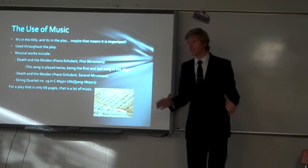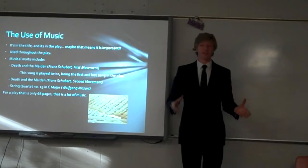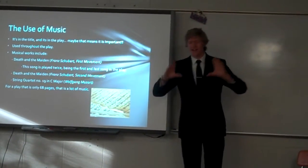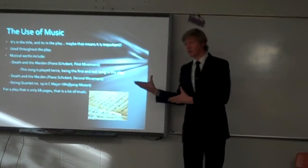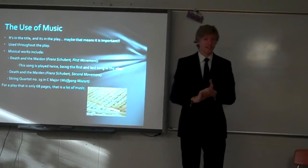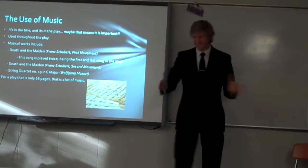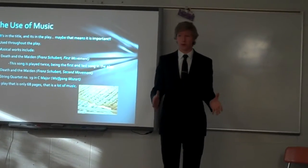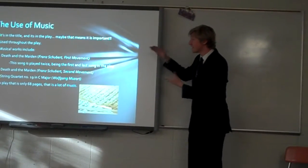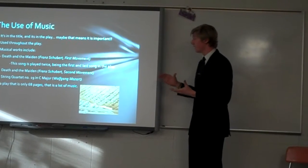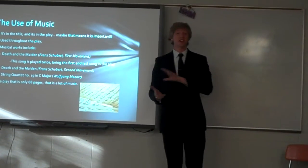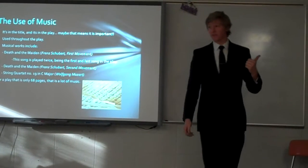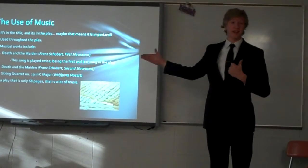Death and the Maiden is the title of the play, and it's also a piece of music that occurs three times throughout the course of the play. Any time a playwright takes a play, names it after a piece of music, and then puts that piece of music in the play three different times, you know it's got to be important. Music in general occurs four times in the play. In the beginning we have Death and the Maiden, the first movement by Franz Schubert, written in 1824.